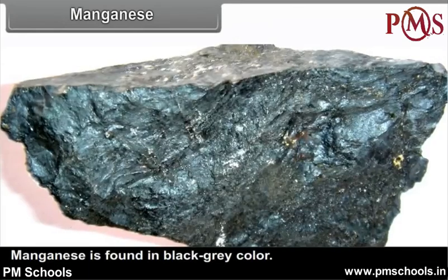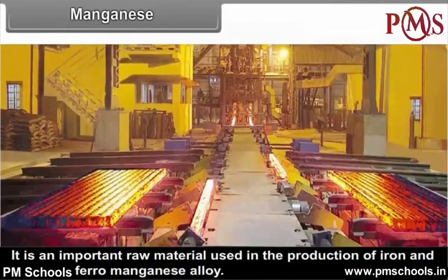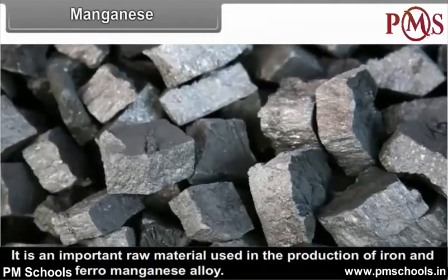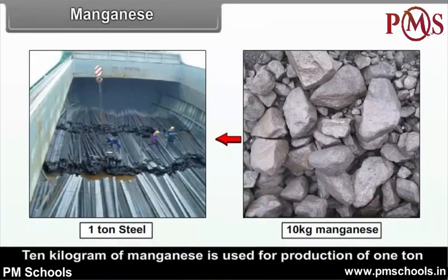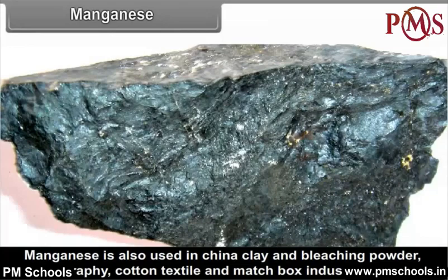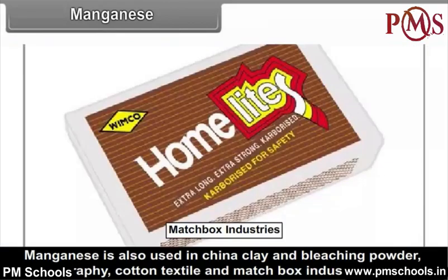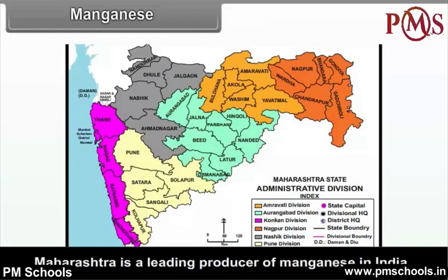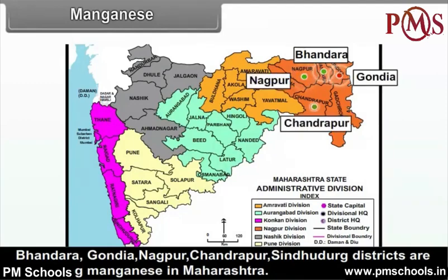Manganese. Manganese is found in black-gray color. It is an important raw material used in the production of iron and steel and ferro-manganese alloy. Approximately 95% of manganese is used in the iron and steel industry; 10 kilograms of manganese is used for the production of 1 tonne of steel. Manganese is also used in china clay, bleaching powder, photography, cotton textile and matchbox industries. Maharashtra is a leading producer of manganese in India. Bhandara, Gondiya, Nagpur, Chandrapur, and Sindhudurg districts produce manganese in Maharashtra.